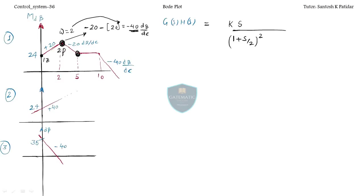Now let's come to the next one. At ω=5, the slope change is 0 — initially it was minus 20. When do you get back to 0? When you get plus 20, it means you are getting a single zero over here.